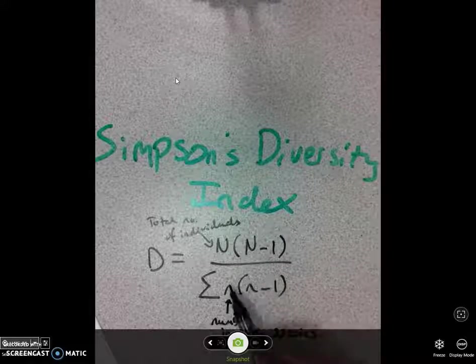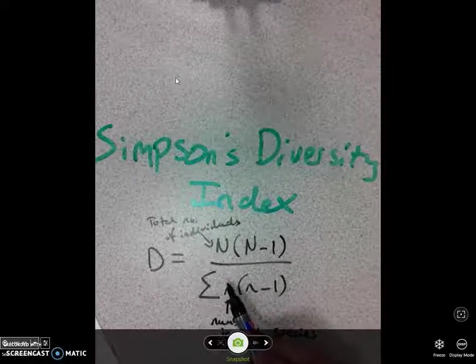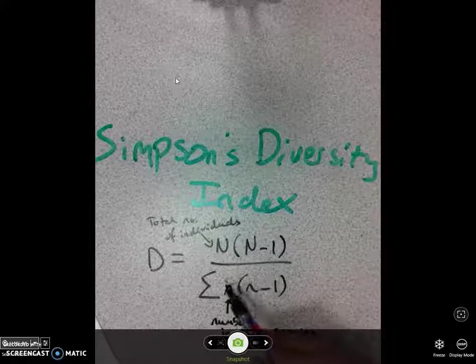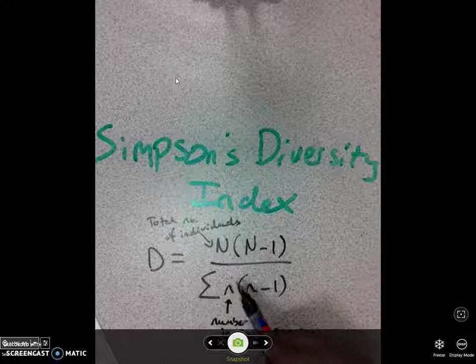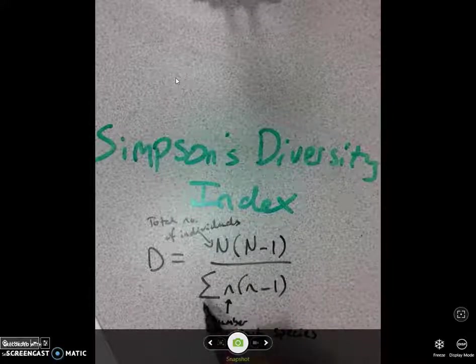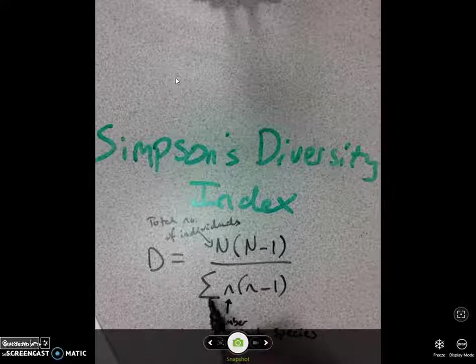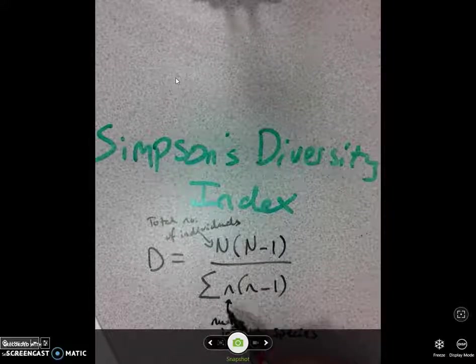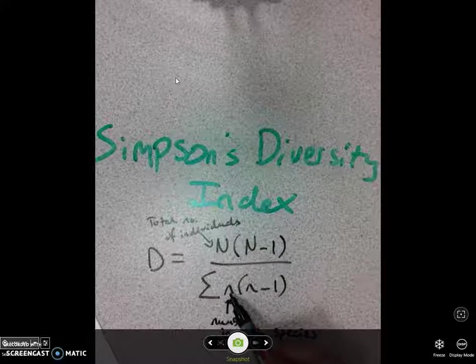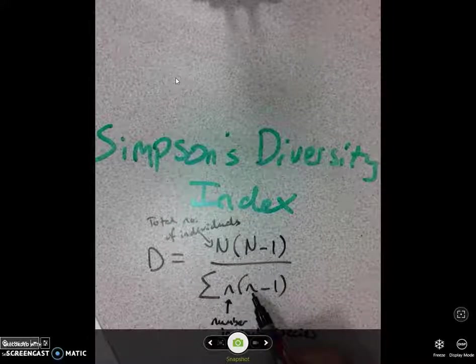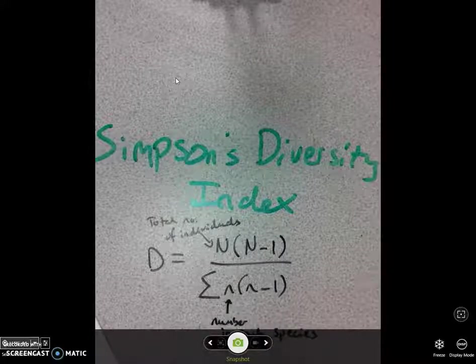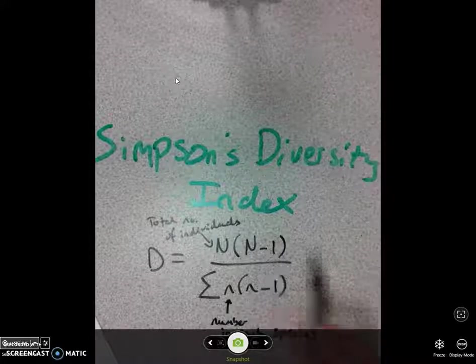And just like before you have the little n, n minus 1. So let's imagine that I had 23 individuals of one species were found. I would do 23 times 22. Now what does this sigma, this funny little E shape here mean? It means the sum of. Remember I said that there could be many values of little n and therefore many little n times little n minus 1. You have to add them all up. So that's all that equation means.